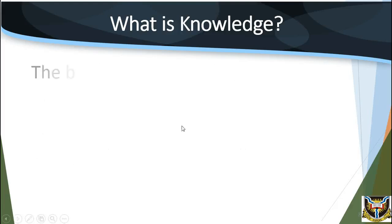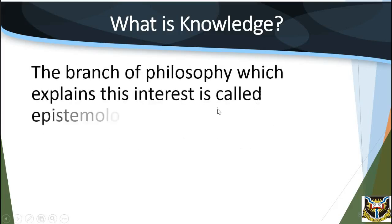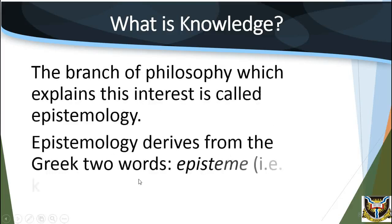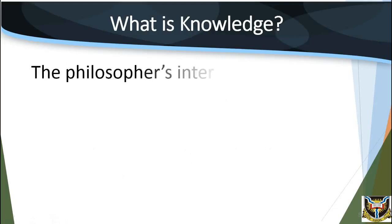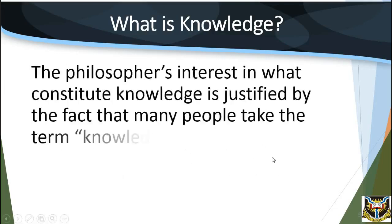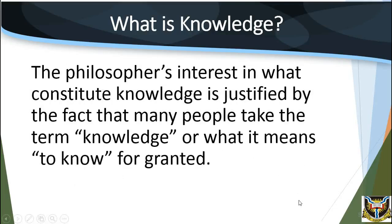The branch of philosophy which explains this interest is called epistemology. Epistemology derives from two Greek words: 'episteme' meaning knowledge, and 'logos' meaning theory or study of. Thus, epistemology is a theory of the study of knowledge. The epistemologist is concerned with the meaning of what it means to know anything. When you claim knowledge of, say, God, what are you talking about? When you say 'I know that I will pass PHI 208,' is it possible to know anything with certainty? How do you know what we claim to know? These are some of the fundamental questions that interest philosophers of knowledge.